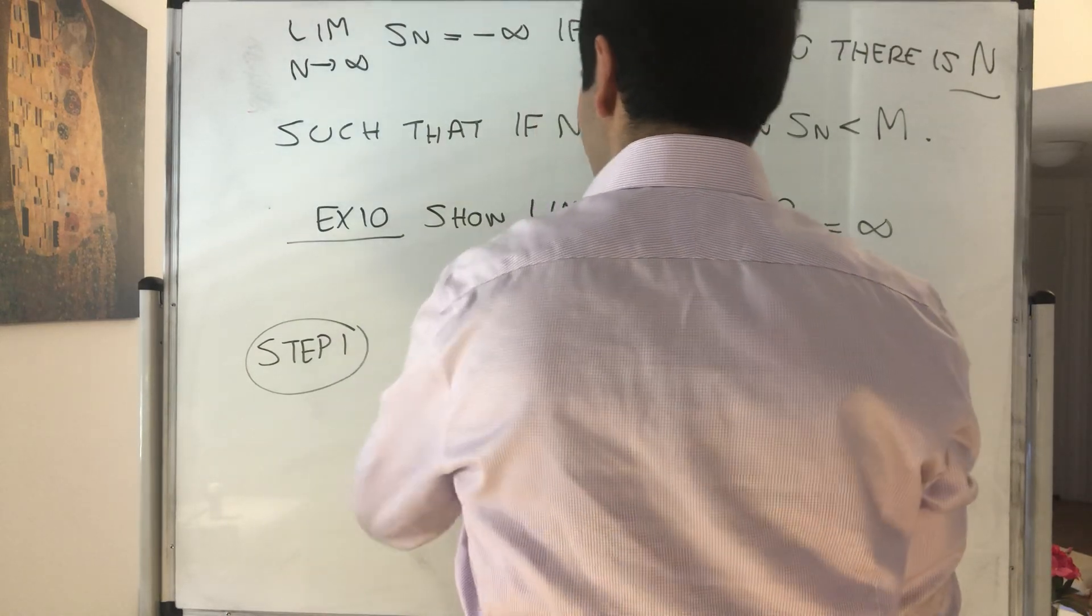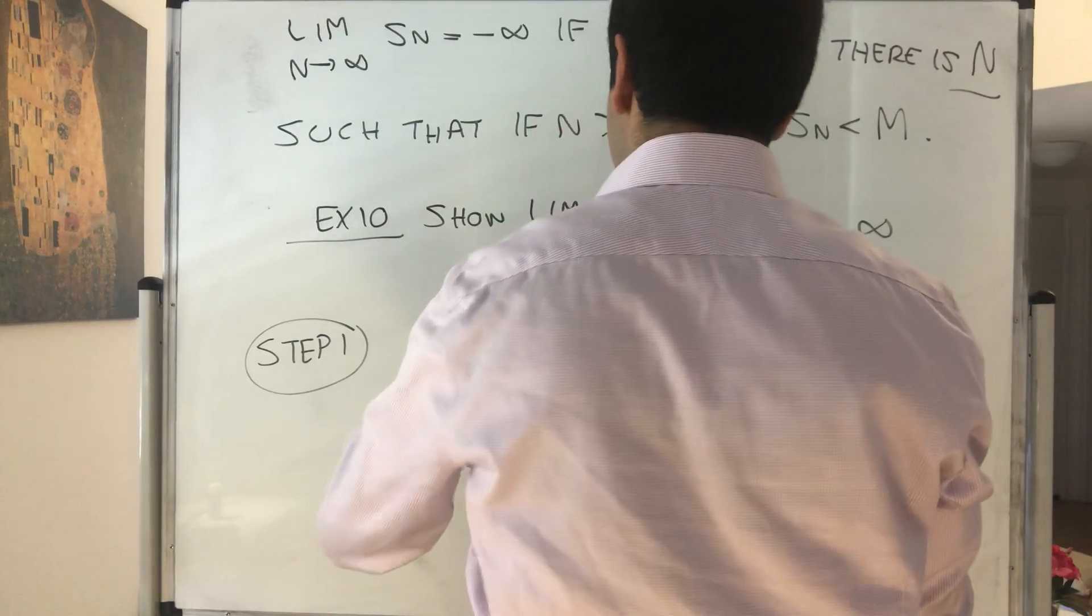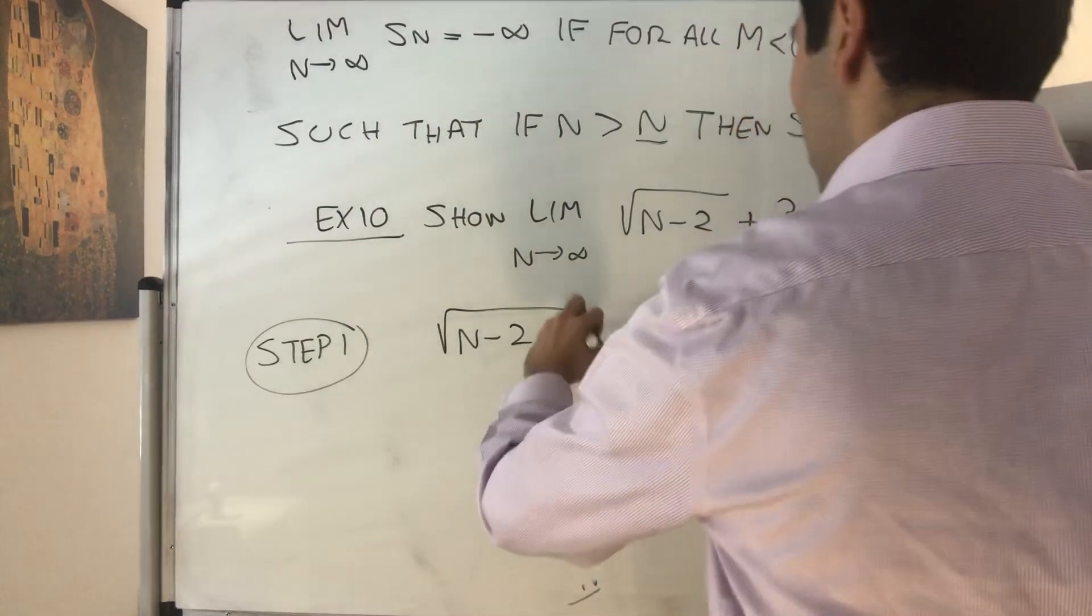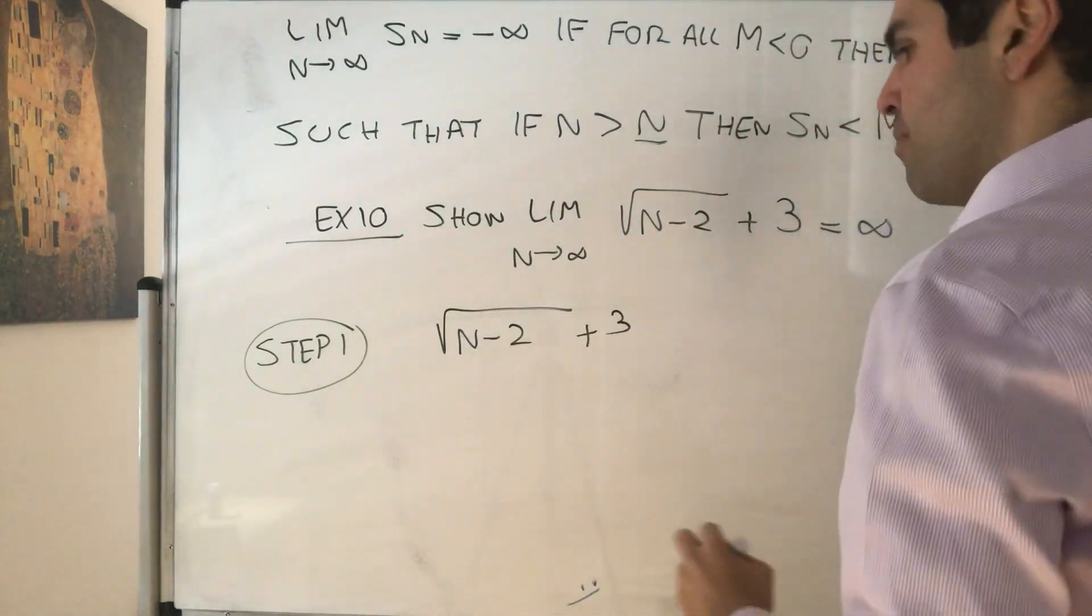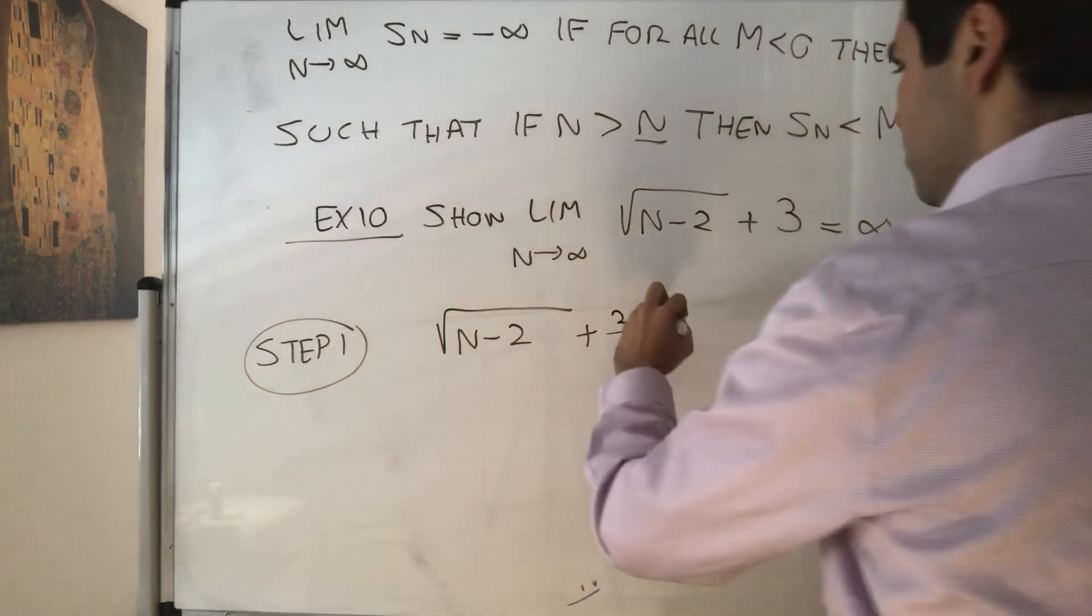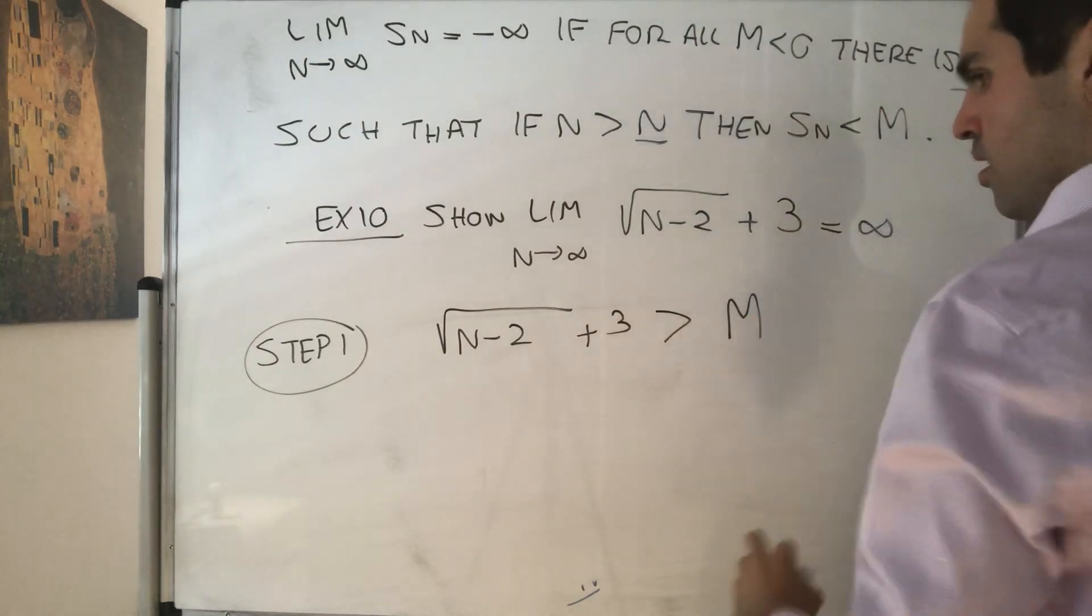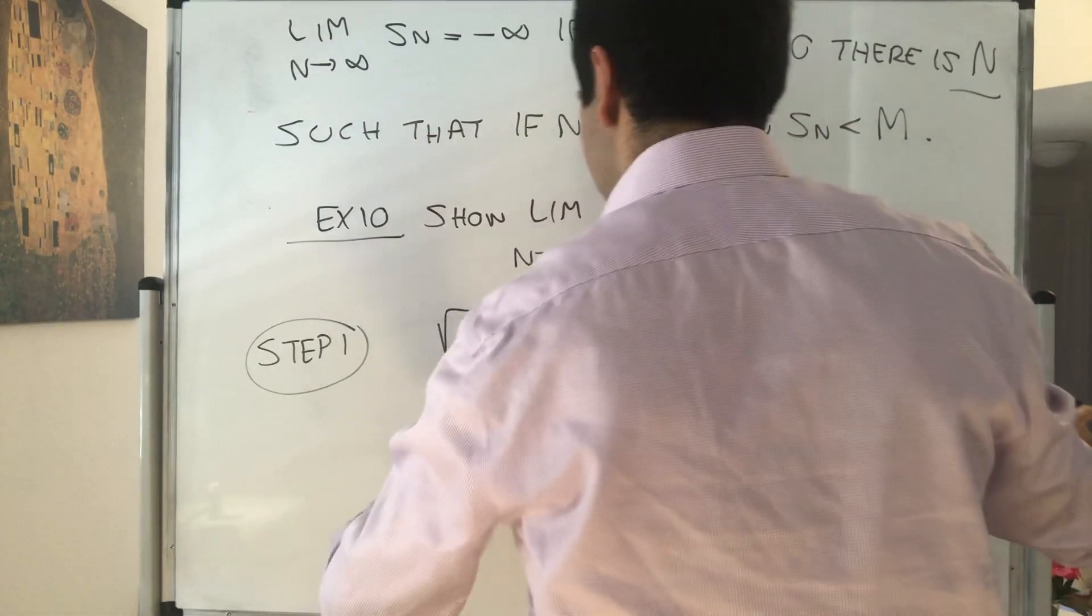So in other words, we just want to find n such that the whole quantity, square root of n minus 2 plus 3, is bigger than m, but this we can just solve.